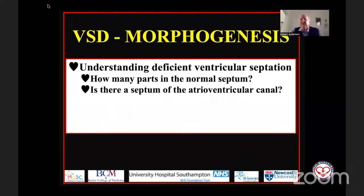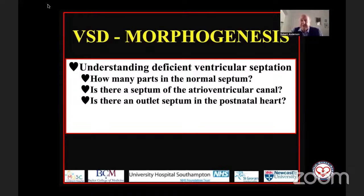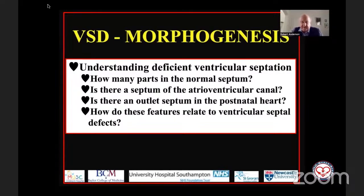Is there a septum of the atrioventricular canal? Some people still define and describe ventricular septal defects on the basis of atrioventricular canal defects. So we need to look at whether there is indeed a septum of the atrioventricular canal. I'd particularly like to concentrate on the outlet septum — is there an outlet septum in the normal heart, or can we find an outlet septum when the ventricular septum itself is deficient? Then I'd like to relate these various features to hearts with deficient ventricular septation.